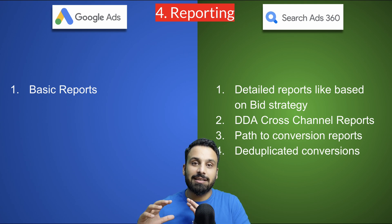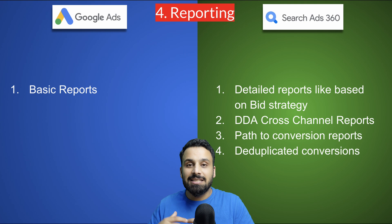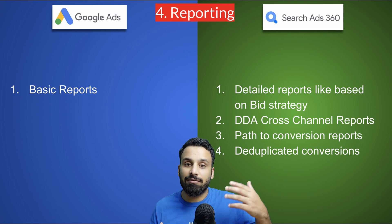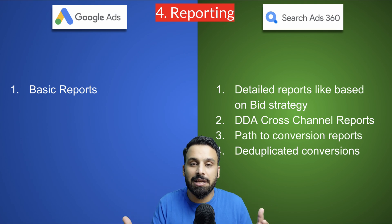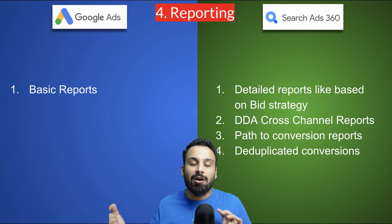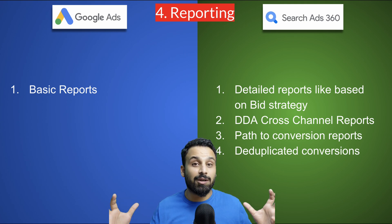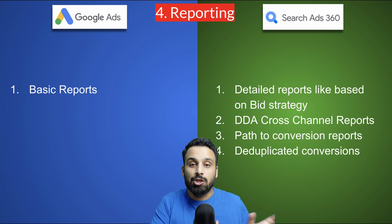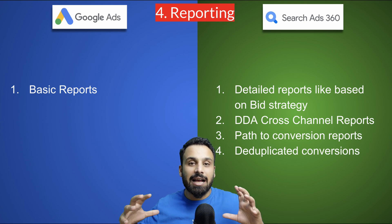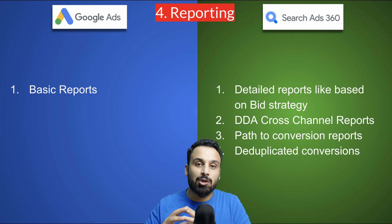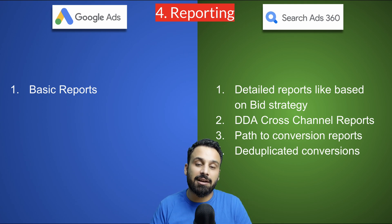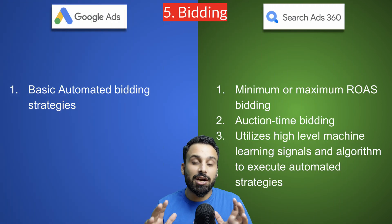You can also generate de-duplicated conversion reports in Search Ads 360. When running campaigns across Google Ads, display, and social media, a single conversion can be attributed to multiple channels, causing the sum of reported conversions to exceed actual conversions. Search Ads 360 solves this by using the same Floodlight tags across channels, allowing you to see the actual number of conversions attributed to each channel using your defined data-driven attribution model.